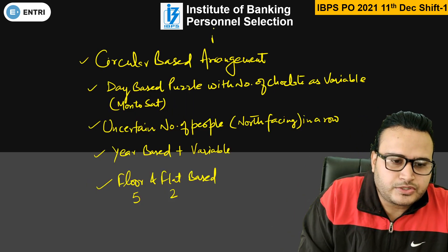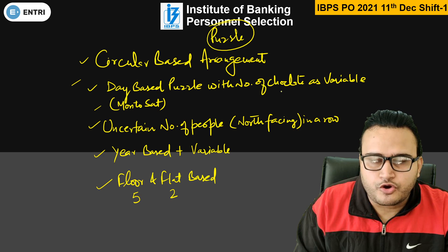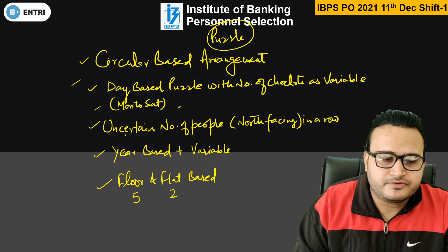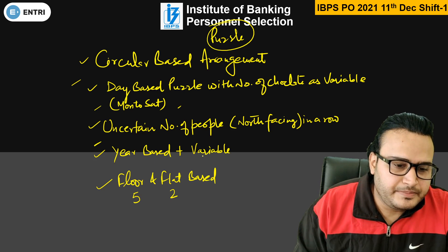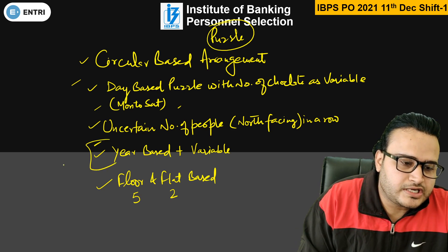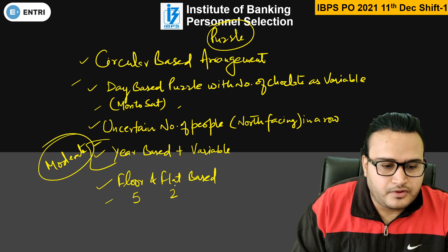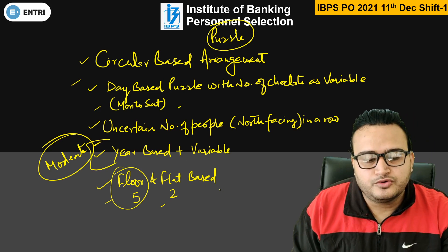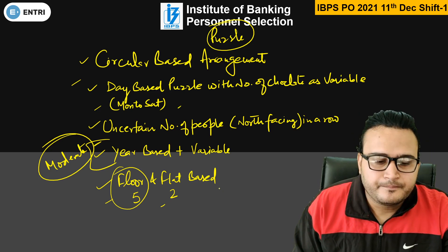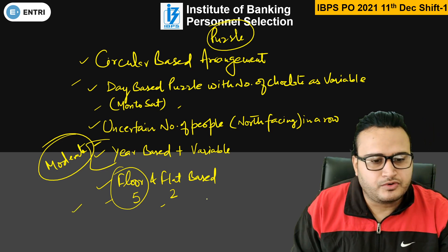Talking about puzzles and sitting arrangement: circular-based sitting arrangement was easy in nature. There was a day-based puzzle with number of chocolates as a variable, Monday to Saturday. A certain number of people were north-facing in a row. A year-based puzzle with a variable was also there — students say this puzzle was of moderate level. Floor and flat-based puzzle had 5 floors and 2 flats, so people had to arrange among 10 arrangements. Please let me know what was the level of these questions.